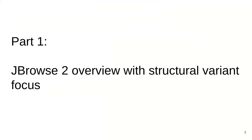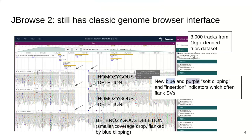I'm going to present an overview of JBrowse2 with a focus on structural variant features. JBrowse2 still has a classic genome browser interface available. You can see here that we're looking at 1000 Genomes data showing a deletion structural variant from a trio with a mother, child, and father.